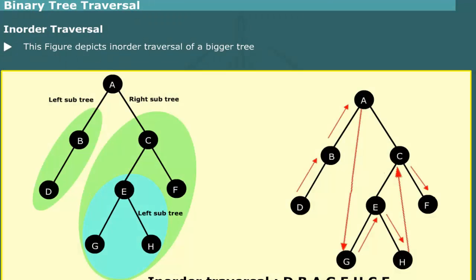This figure depicts in-order traversal of a bigger tree. To traverse in order, first the left subtree T1 is traversed to visit D, B. Then root node A is visited. Next, left subtree T3 within the right subtree T2 is visited. It consists of nodes G, E, and H. Lastly, remaining nodes C and F of the right subtree are visited.